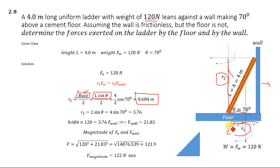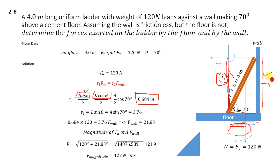Now we calculate r2, which is the perpendicular side of the right triangle formed by the ladder against the wall. The perpendicular equals L·sinθ, so r2 = L·sinθ. Substituting L = 4 meters and θ = 70 degrees gives r2 = 4 × sin(70°) = 3.76 meters.